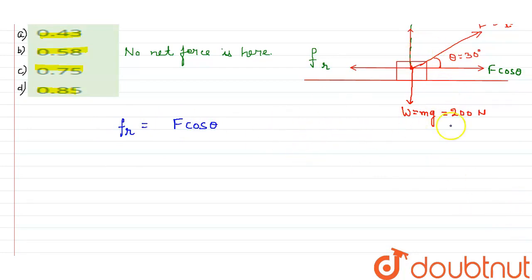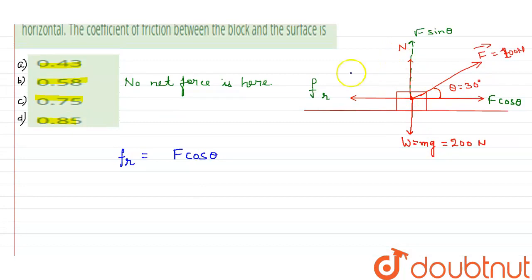So here from the figure we can see that N plus F sin theta, N plus F sin theta is nothing but equals to W, that is equals to mg, and that is also equal to 200 N.